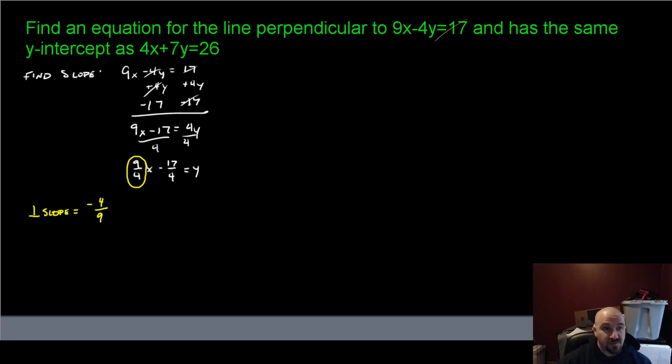I then need to find the y-intercept using from this particular equation 2x + 7y = 26. You can do this one of two ways. You could solve it for y and then the number that's not associated with the x is the y-value of the y-intercept. However, I also know that the y-intercept occurs when x is zero. So I'm just going to put in x = 0 and that's going to kill that total term. That's going to leave me with 7y = 26. If I divide by 7 on both sides, I get y = 26/7.